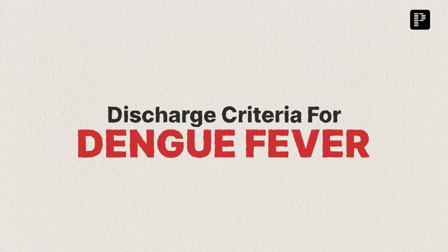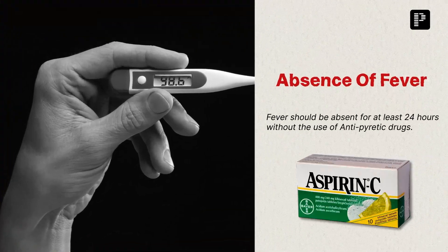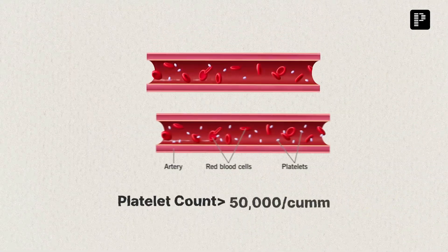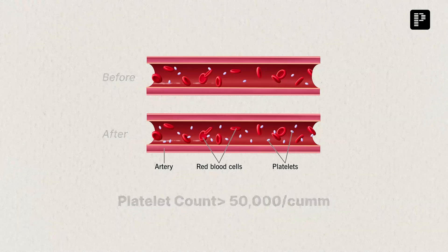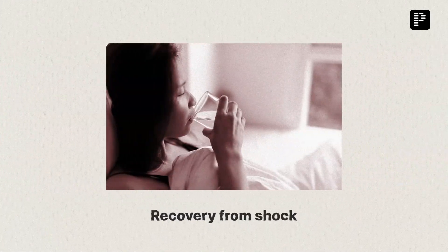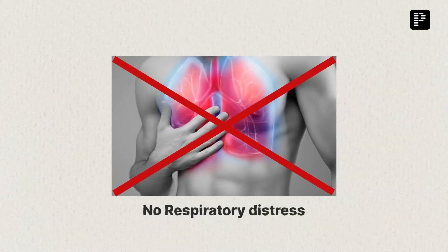A patient can be discharged if they meet the following criteria: absence of fever for at least 24 hours without the use of antipyretic drugs, platelet count greater than 50,000, return of appetite, adequate urine output, visible clinical improvement, minimum of 2 to 3 days after recovery from shock, and no respiratory distress from pleural effusion or ascites.